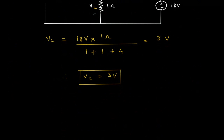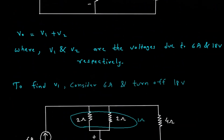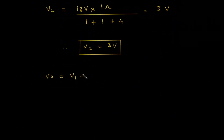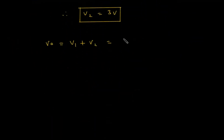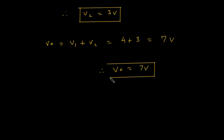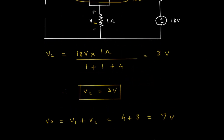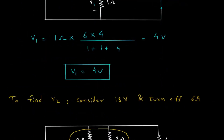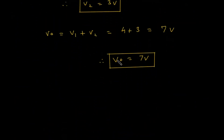With V1 equal to 4 volt and V2 equal to 3 volt, Vo equals V1 plus V2, which is 4 plus 3, giving Vo equal to 7 volt. This is the value of Vo found using the superposition theorem.